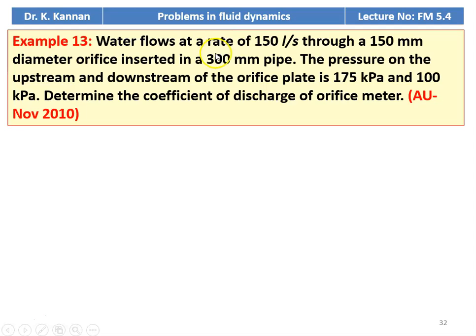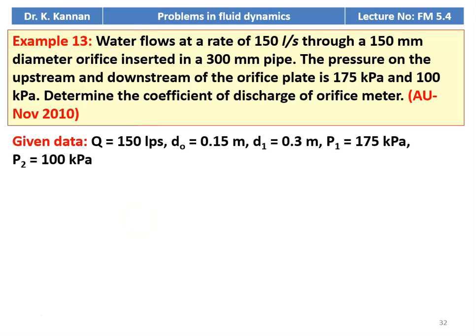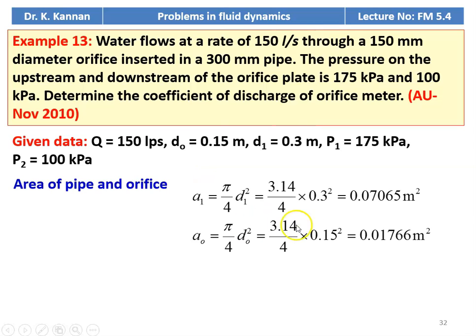Example number 13 from the November 2010 question paper: water flows at a rate of 150 liters per second through a 150-millimeter diameter orifice inserted in a pipe of 300 millimeters diameter. The pressure upstream and downstream of the orifice plate are 175 kilopascals and 100 kilopascals. Determine the coefficient of discharge. Q equals 0.15 m³/s, orifice diameter is 0.15 m, pipe diameter D1 equals 0.3 m. A1 = 0.07065 m², A₀ = 0.01766 m².